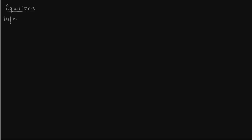We start defining equalizers. Fix a category C and two arrows F and G from object A to object B. The equalizer of F and G — also written as the kernel of F and G — is a pair (K, k), where the first K is an object of the category C.